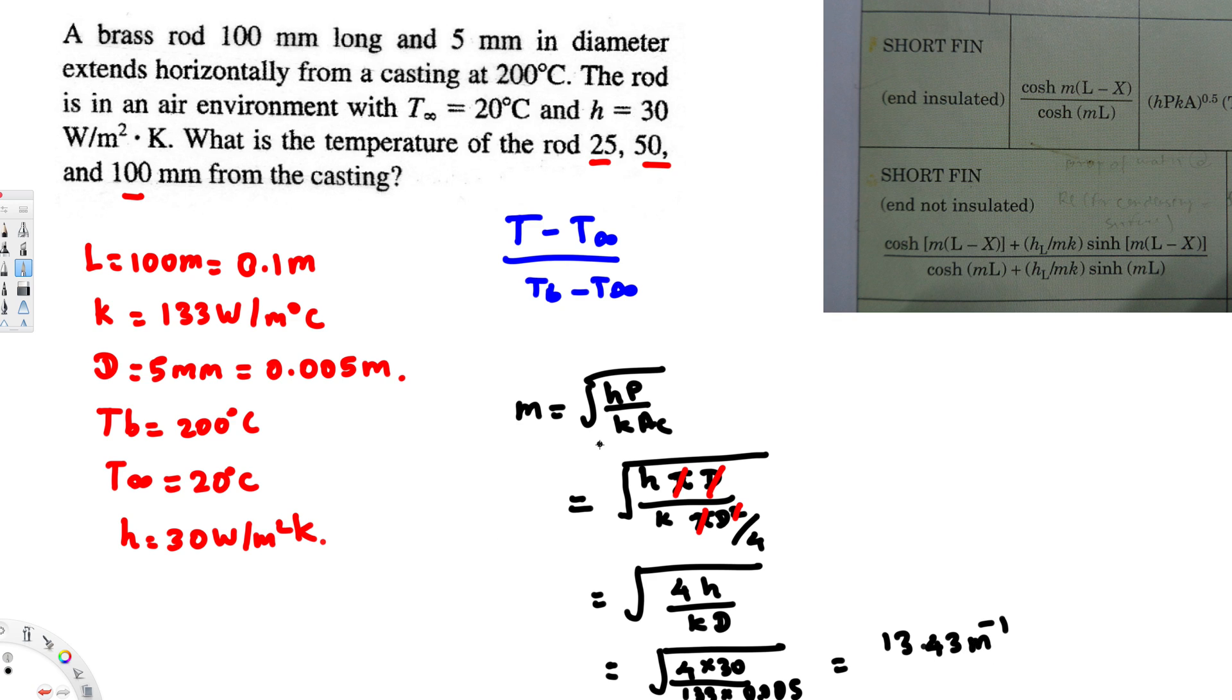This is our m value. Let's see what else we need: hL over mk. After you find this value, you just have to plug this in the equation to solve. We have T infinity, that's ambient temperature, and we have base temperature. We're trying to find this temperature.